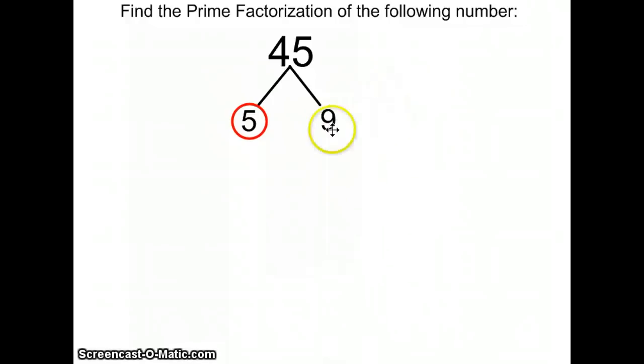9 is not a prime number. Because it's not a prime number, I'm now going to go ahead and draw branches under it. And on these branches, I need to put factors that multiply together to give me 9. So I think of what my factors of 9 are.